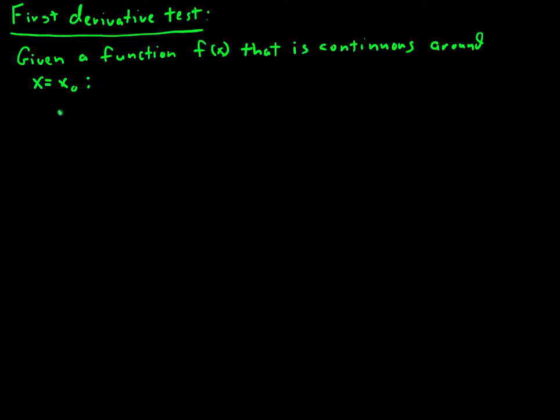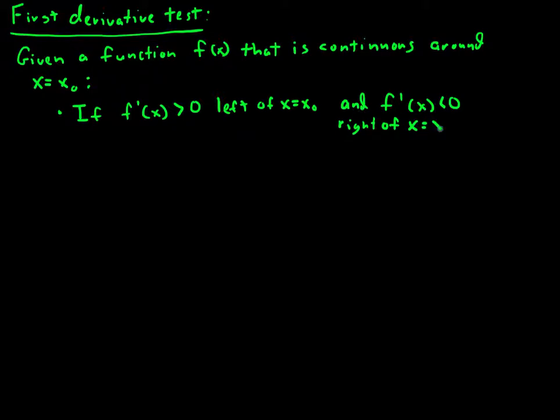So one, if f prime of x is greater than zero, let's say left of x equals x-naught, and f prime of x is less than zero right of x equals x-naught.